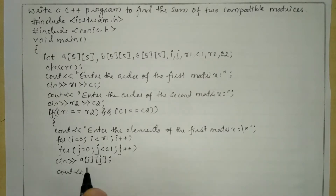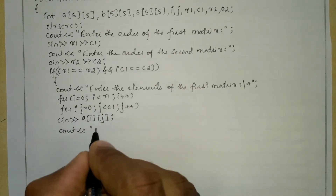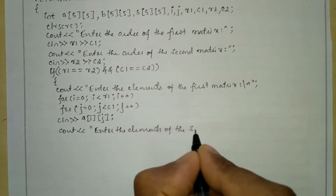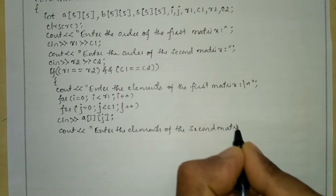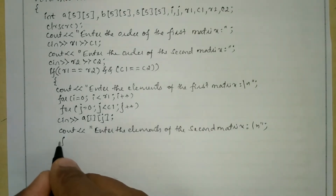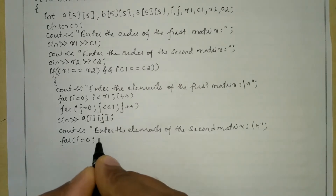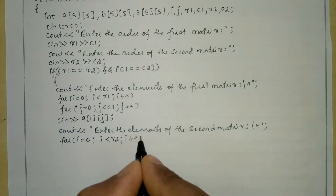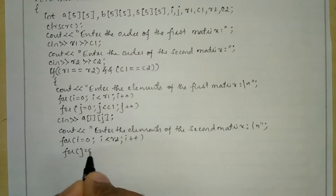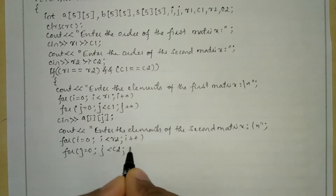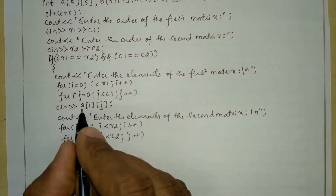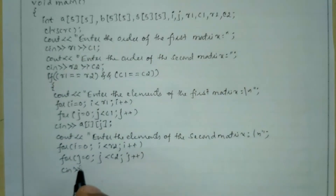After this we will ask the user to enter the elements of the second matrix: "enter the elements of the second matrix", backslash n, semicolon. Again we use for i equal to 0, i less than R2, i plus plus, and an inner for loop for j equal to 0, j less than C2, j plus plus. We write the cin statement and this time we take the elements for matrix B of i j.